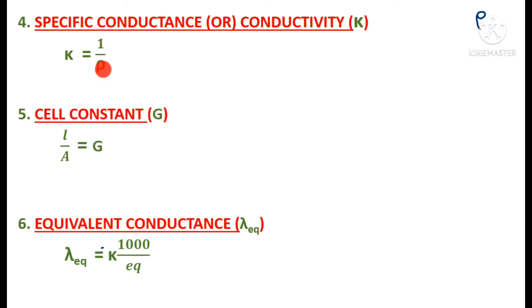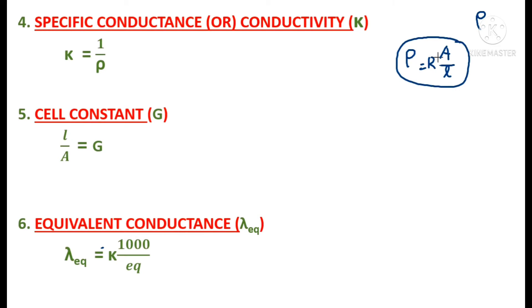Since rho = R × A / L, the reciprocal gives kappa = L / (R × A). So the formula for specific conductance is κ = L / (R × A), where L is length, R is resistance, and A is area of cross section.